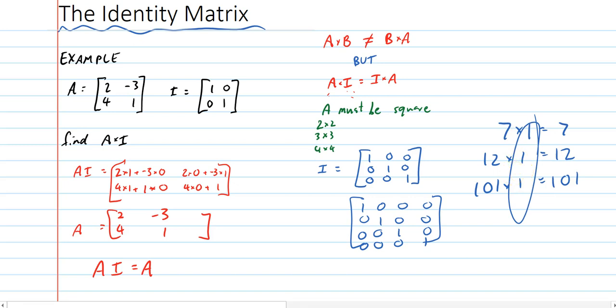So, important things to note: identity matrices only exist when things are square. If you've got an identity matrix, A times I will be the same as I times A, and that's the only time that you can reverse those multiplication principles. And A times I will also be equal to A, in the same way that 7 times 1 will always be 7.